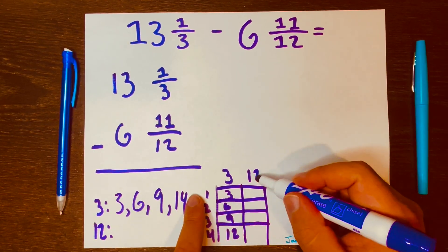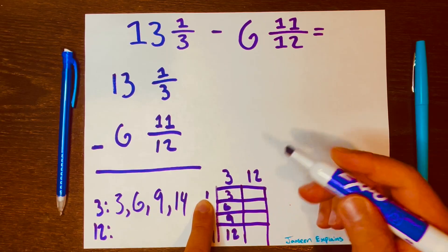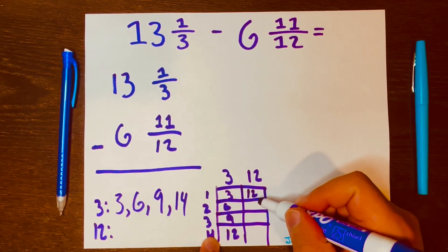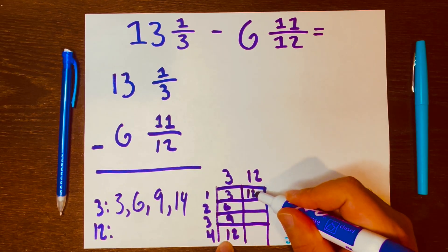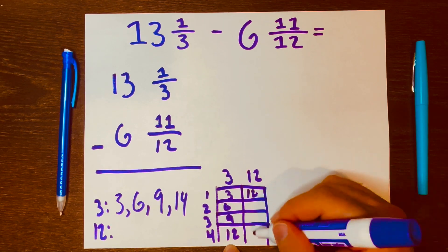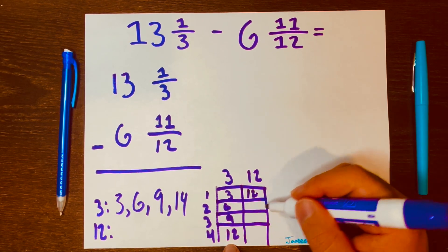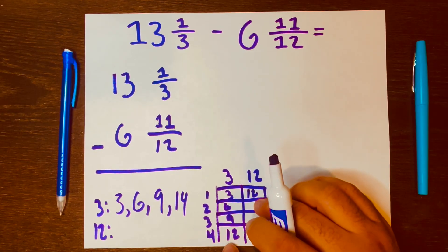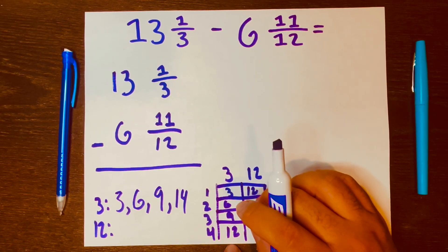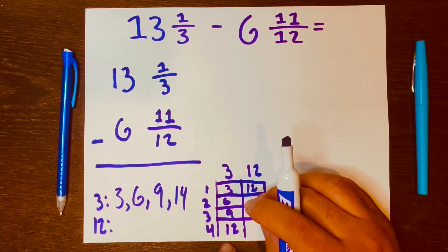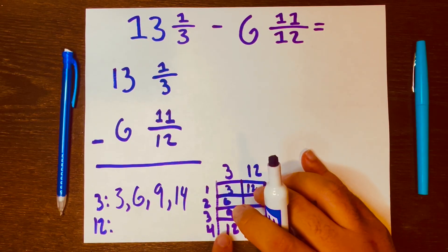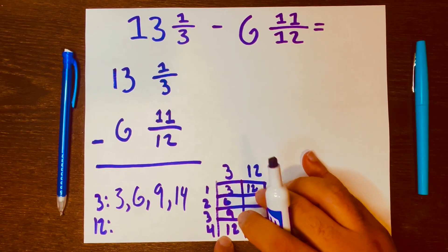And the multiples for 12, 1 times 12 is 12. Look at that, there's a 12 here and a 12 there. That's good. So we don't have to continue multiplying 2 times 12 is 24. We can just stop there because you should know why. The 12 is the smallest multiple that both numbers here have in common. So that is the lowest common multiple, 12.